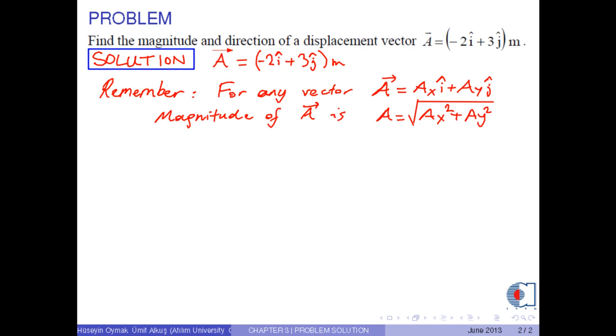Remember that for any vector a which is ax i-hat plus ay j-hat, its magnitude is found by the formula: a equals square root of ax squared plus ay squared.